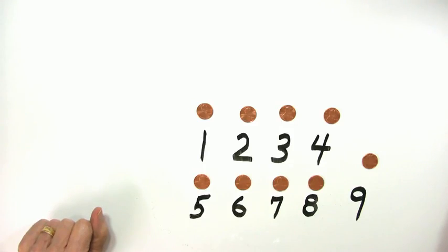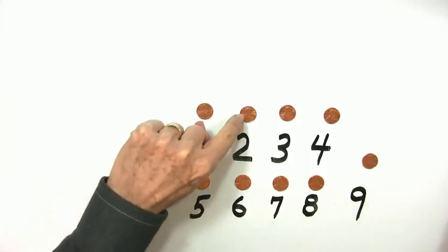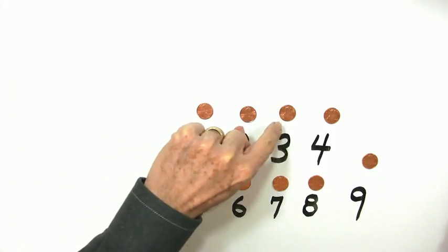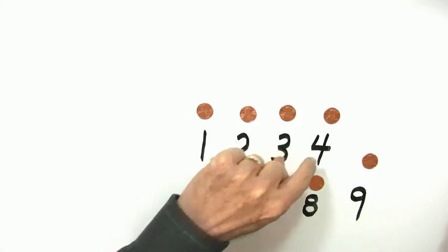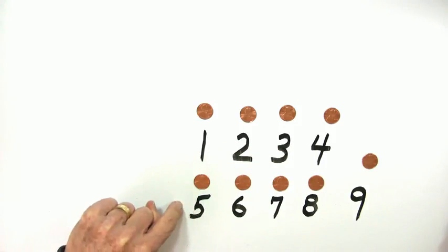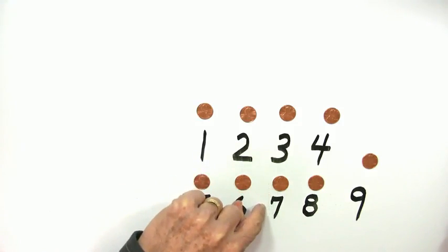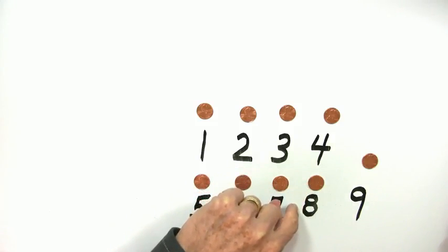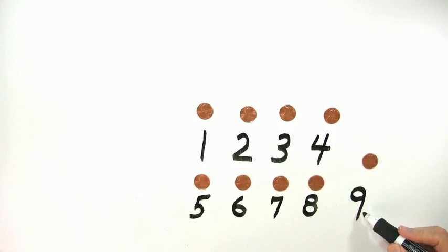So have you got it clear what we're calling each of the pennies? Penny number one, penny number two, penny number three, penny number four, penny number five, penny number six, penny number seven, penny number eight, and our last penny is penny number nine. So each of the pennies is laid out, and the pennies each correspond to a number. We have a total of nine pennies, and we have a number for each of these pennies.